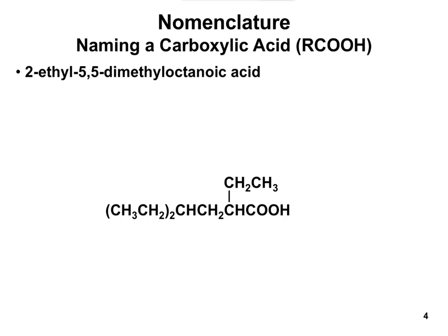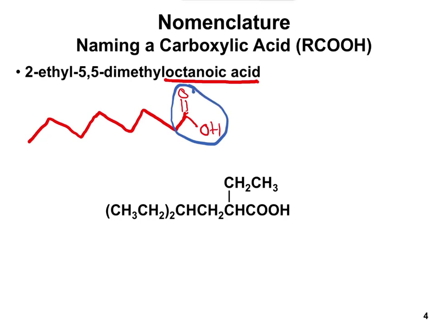Let's practice naming a couple. For 2-ethyl-5,5-dimethyloctanoic acid — octanoic acid tells us we have an eight-carbon long carboxylic acid. We draw it as a skeletal structure with eight carbons, and that eighth carbon is attached to a double bond to O and also to an OH. That part is our carboxylic acid group.